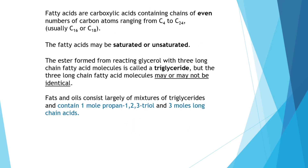Fatty acids are long chain carboxylic acids that have many carbon atoms in their chain prior to the carboxyl group. Normally the chains have even numbers of carbons in total — anything from 4 to 24, but more commonly 16 or 18 carbon atoms. Fatty acids can be saturated, containing carbon-to-carbon single bonds only, or they can be unsaturated, containing several carbon-to-carbon double bonds. The number of double bonds determines the degree of unsaturation.